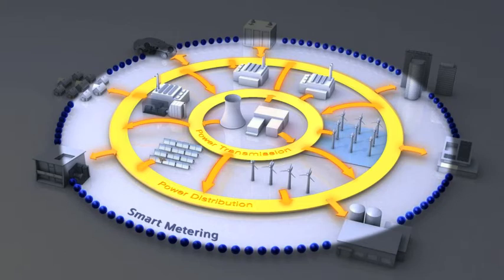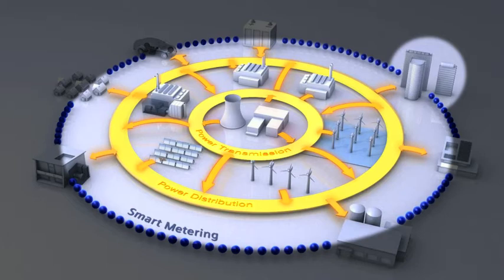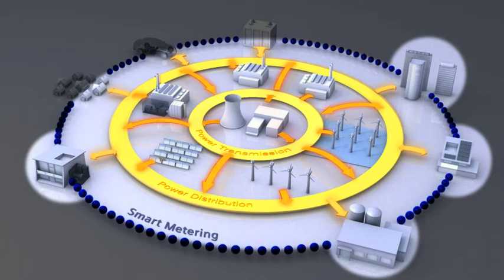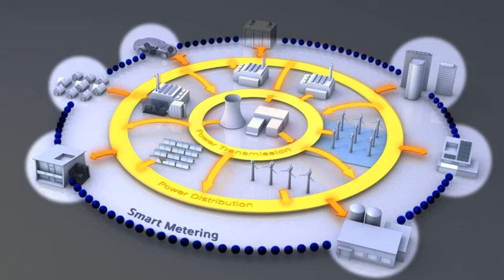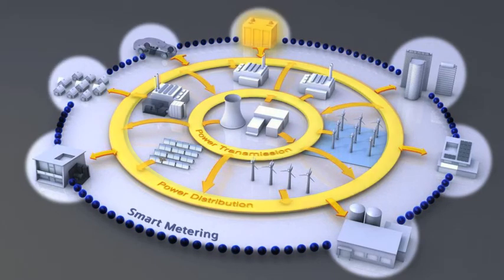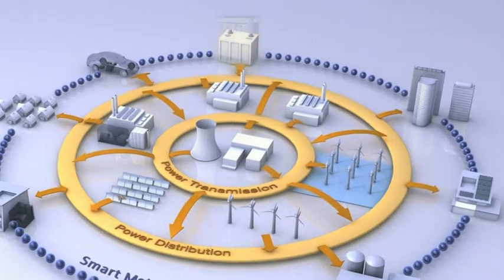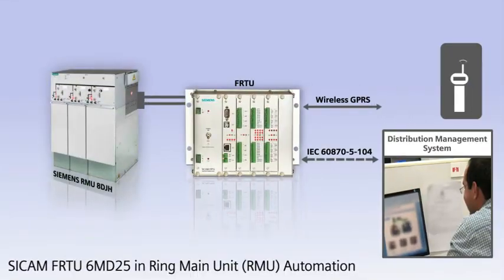Automation with supervision, monitoring, and control plays a key role here. One of the components of the distribution grid is the ring main unit or RMU. The FRTU is interfaced with the ring main unit to manage power distribution needs.